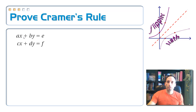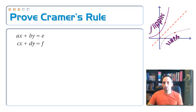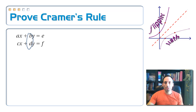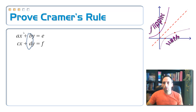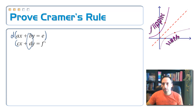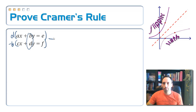I can't use specific numbers — I have to use the variables that are in these equations. I need these coefficients to match just the opposite numbers. So I'm going to multiply the top equation by d and multiply the bottom equation by negative b, so that they're exact opposites and they cancel out.